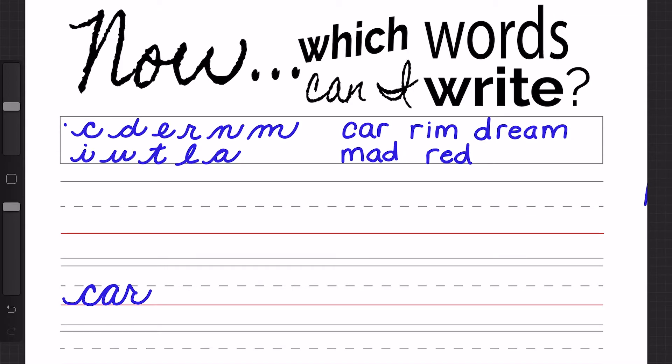Now I'm going to write the word 'rim,' and I'm going R to I to M, sweeping out, and then after that I dot my I.